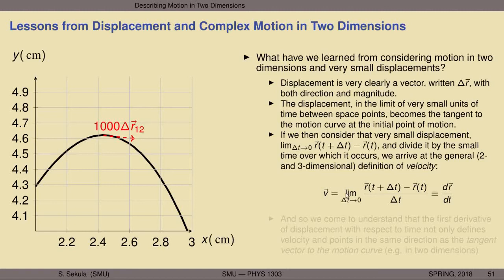We can consider very small displacements in the limit that the time goes to zero. If we take that displacement and divide it by the very small time, we arrive at the general two- or three-dimensional definition of velocity: the limit as delta t goes to zero of the difference between the r vectors at a slightly later time t plus delta t and the original time t, divided by delta t. This is exactly the definition of the first derivative with respect to time of the vector r. So if you're given the functional form of r as it varies with time, you can solve for the instantaneous velocity at any time t.